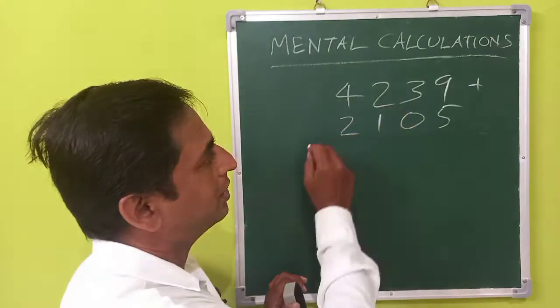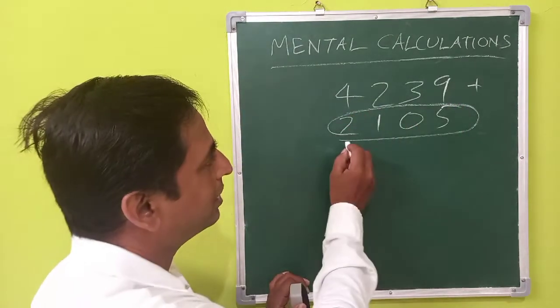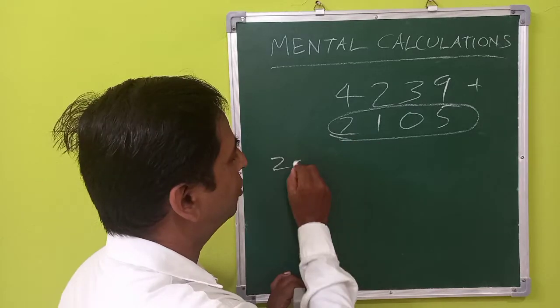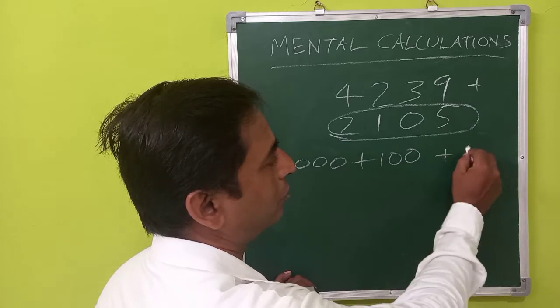For that you can just take the number which is 2105 and you can just split it into 2000 plus 100 plus 5.